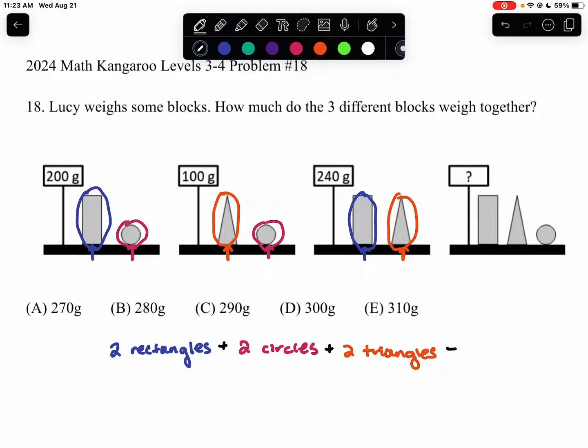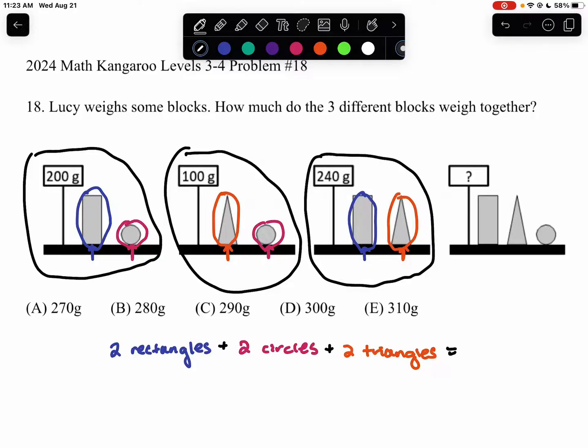So, if we were to take all these three weights together, we end up with two rectangles plus two circles plus two triangles for a combined weight of 200 plus 100 plus 240 grams, which is equal to 300 plus 240 grams, which is equal to 540 grams.